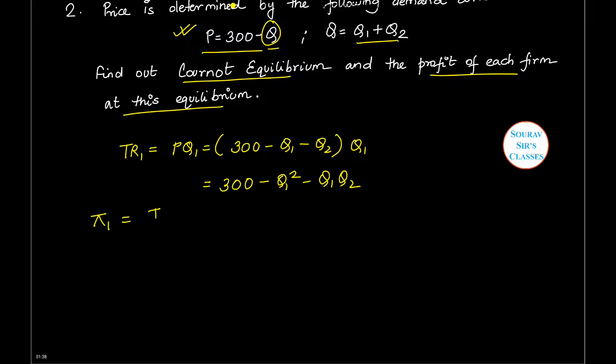Let us calculate the profit for the first firm. It will be total revenue minus total cost, so this is 300Q1 minus Q1 squared minus Q1Q2 minus 60Q1, which is the cost function.